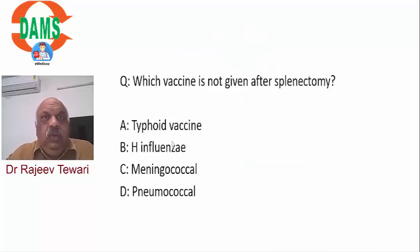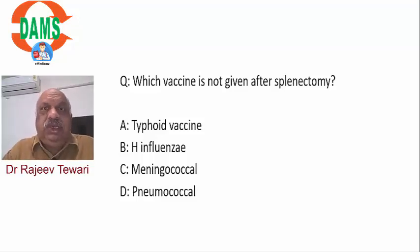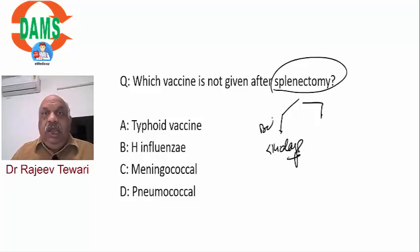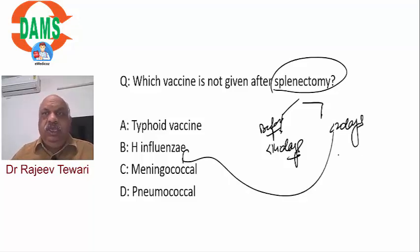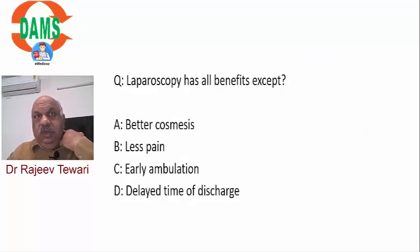Post-splenectomy vaccines: after splenectomy, encapsulated bacteria cannot be destroyed, leading to OPSI (overwhelming post-splenectomy infection), more common after elective than emergency splenectomy. In elective cases, vaccines should be given within 14 days prior to surgery. In emergency cases, give vaccines within 48 hours: HIB (Haemophilus influenzae), within 2 weeks meningococcal and pneumococcal. These three vaccines are given. Typhoid vaccine is NOT given - this is the answer.